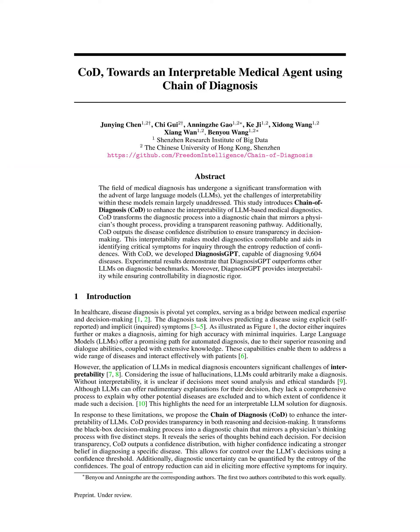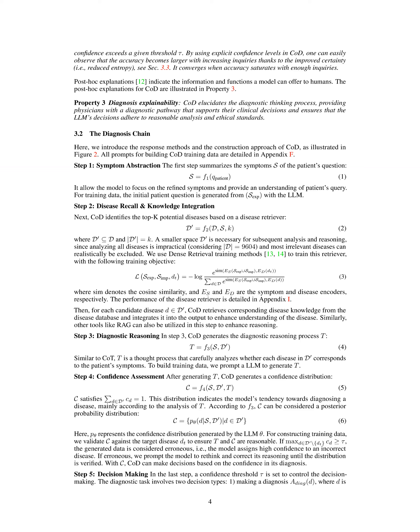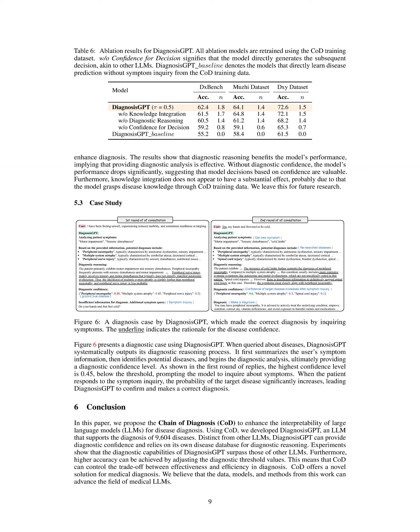Step 1 — Symptom Abstraction: This initial step involves summarizing the patient's explicit symptoms, allowing the model to focus on relevant information and understand the patient's query better. It sets the foundation for the subsequent steps by refining the symptom data.